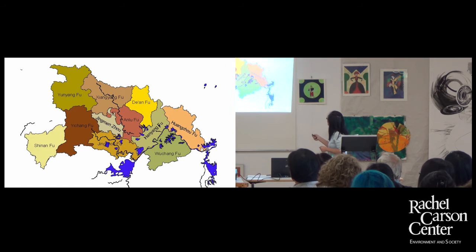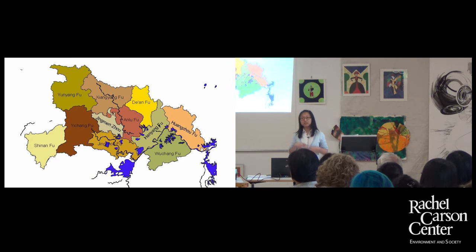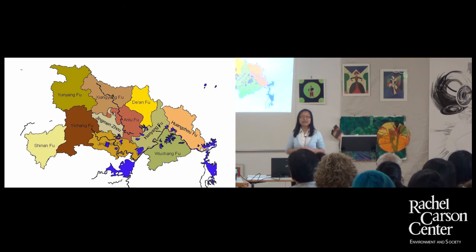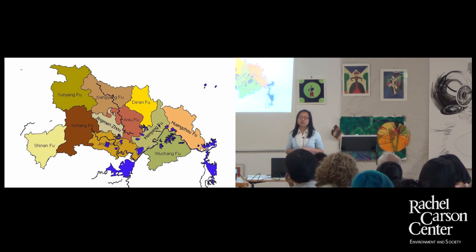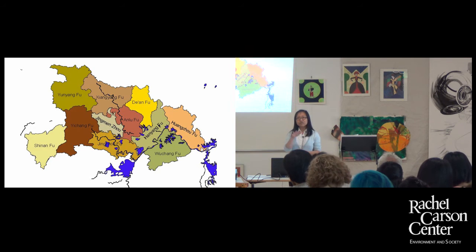The Jianghan Plain is at the lower reaches of Hubei. My focus is how water is completely situated in local societies. I analyze how local communities manage water resources, how they collaborated on dike construction, managed and repaired dikes, and resolved conflicts. It's completely focused on local hydraulic communities.